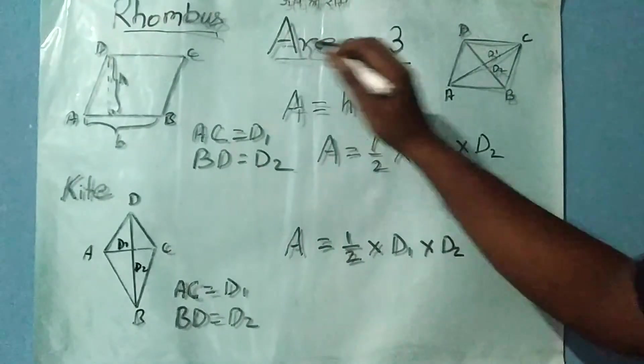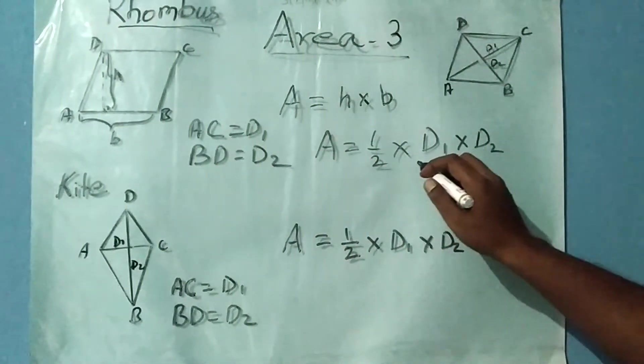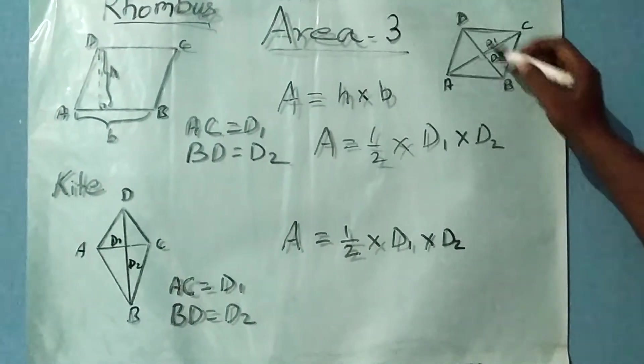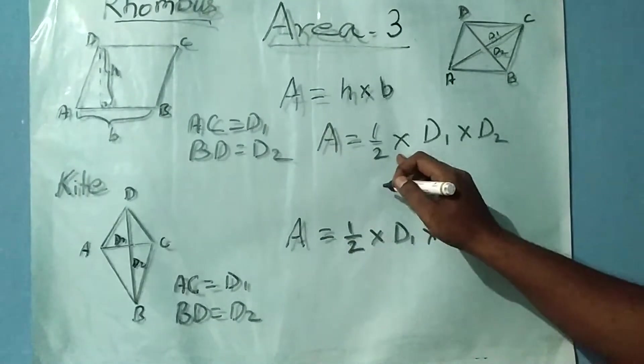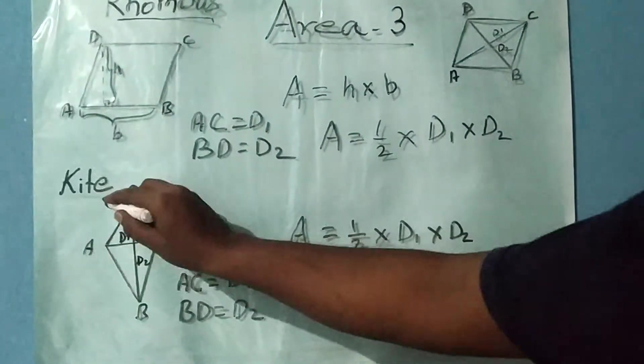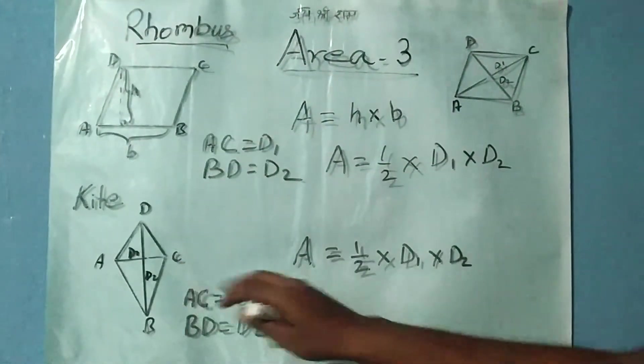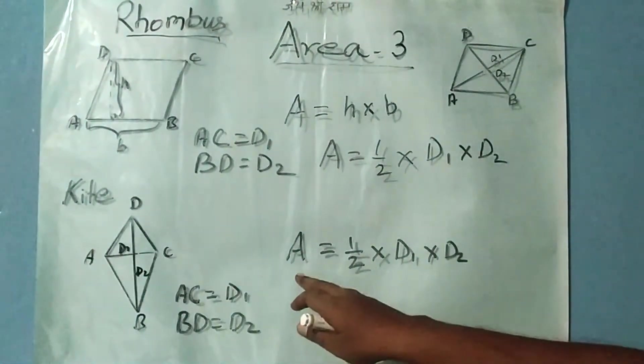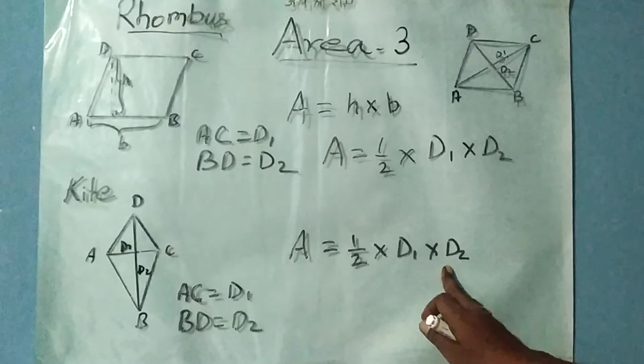Another formula for finding the area of rhombus: if we know the length of the diagonals, this formula can be applied. Here, suppose AC is D1 and BD is D2. Then the area of the rhombus will be half × D1 × D2.